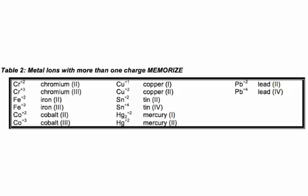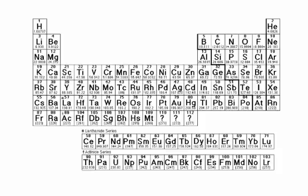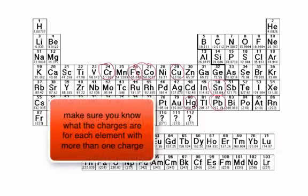An easy way to remember them is by looking at the periodic table. You could note that chromium, iron, cobalt, copper, tin, mercury, and lead—these elements have more than one charge.